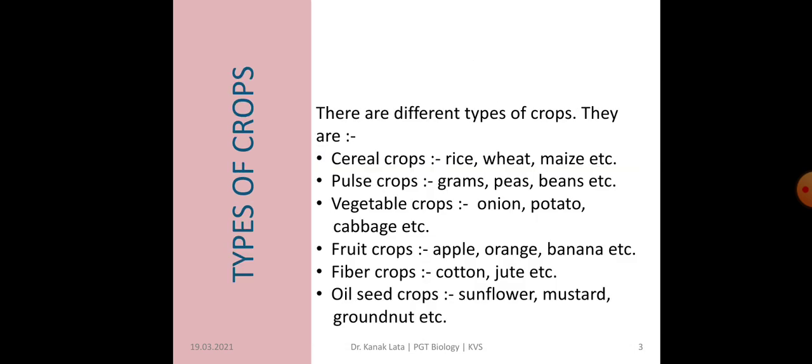Now there are different types of crops. First is cereal crops, like rice, wheat, maize, etc. Now pulse crops, like grams, peas, beans, etc. Now vegetable crops — onion, potato, cabbage, etc. Fruit crops — apple, orange, banana, etc. Fiber crops — cotton, jute, etc. Oil seed crops — sunflower, mustard, groundnut. So these are the different types of crops.